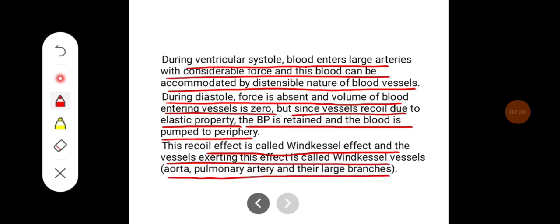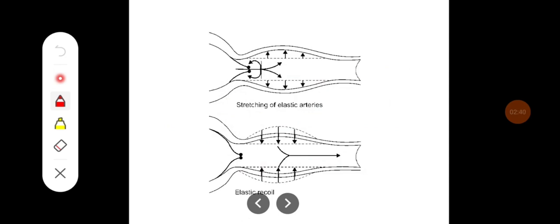This is the mechanism by which the Windkessel effect acts: when blood flows into the artery it creates pressure, and because of the elasticity the vessel walls tend to distend. When they recoil, they push the blood in a forward direction — this is called the Windkessel effect.